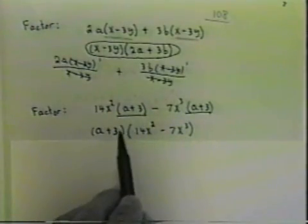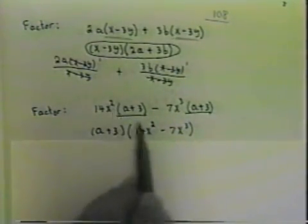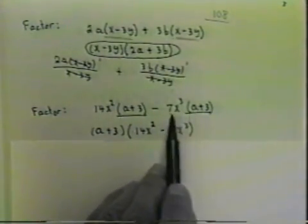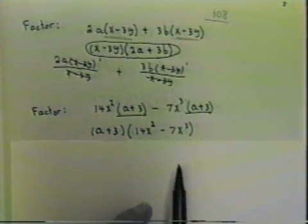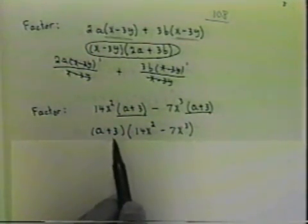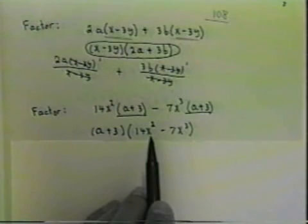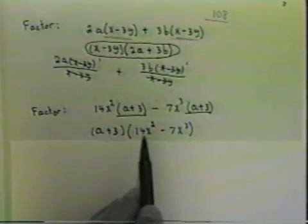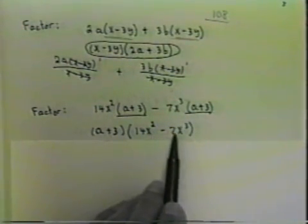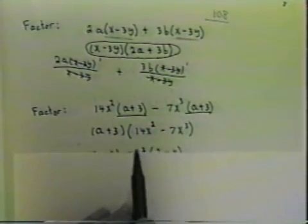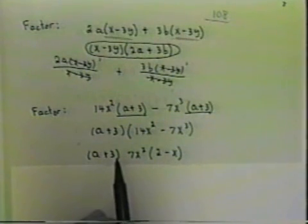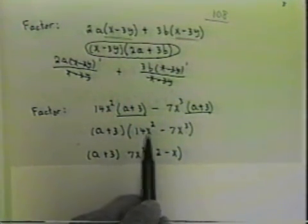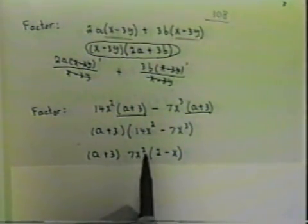When I factor the a plus 3 out of the first one, I'm left with 14x squared. If I take the a plus 3 out of the second one, I'm left with 7x squared. So I have a plus 3 times 14x squared minus 7x cubed. Notice I can factor 14x squared minus 7x cubed again.